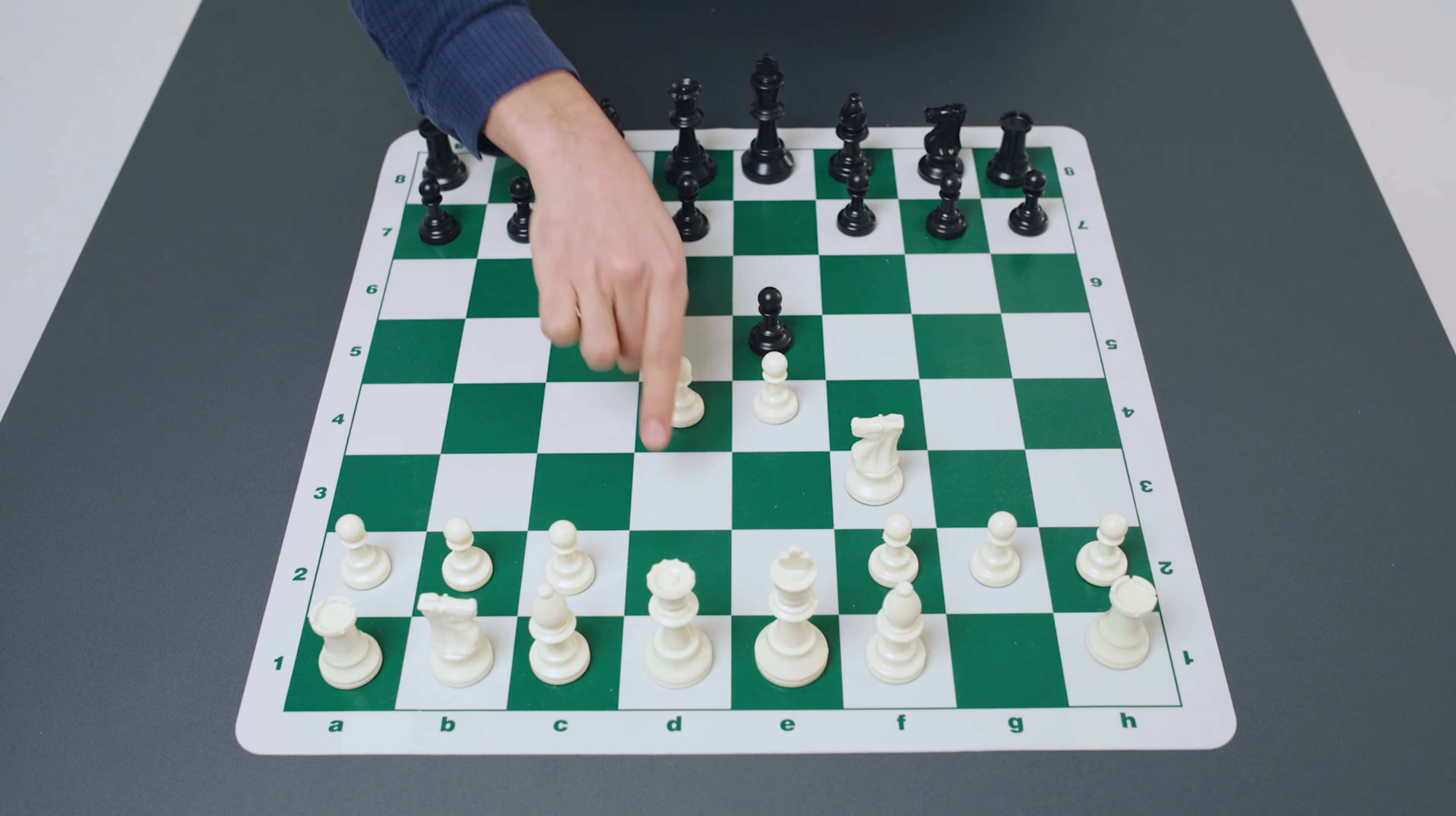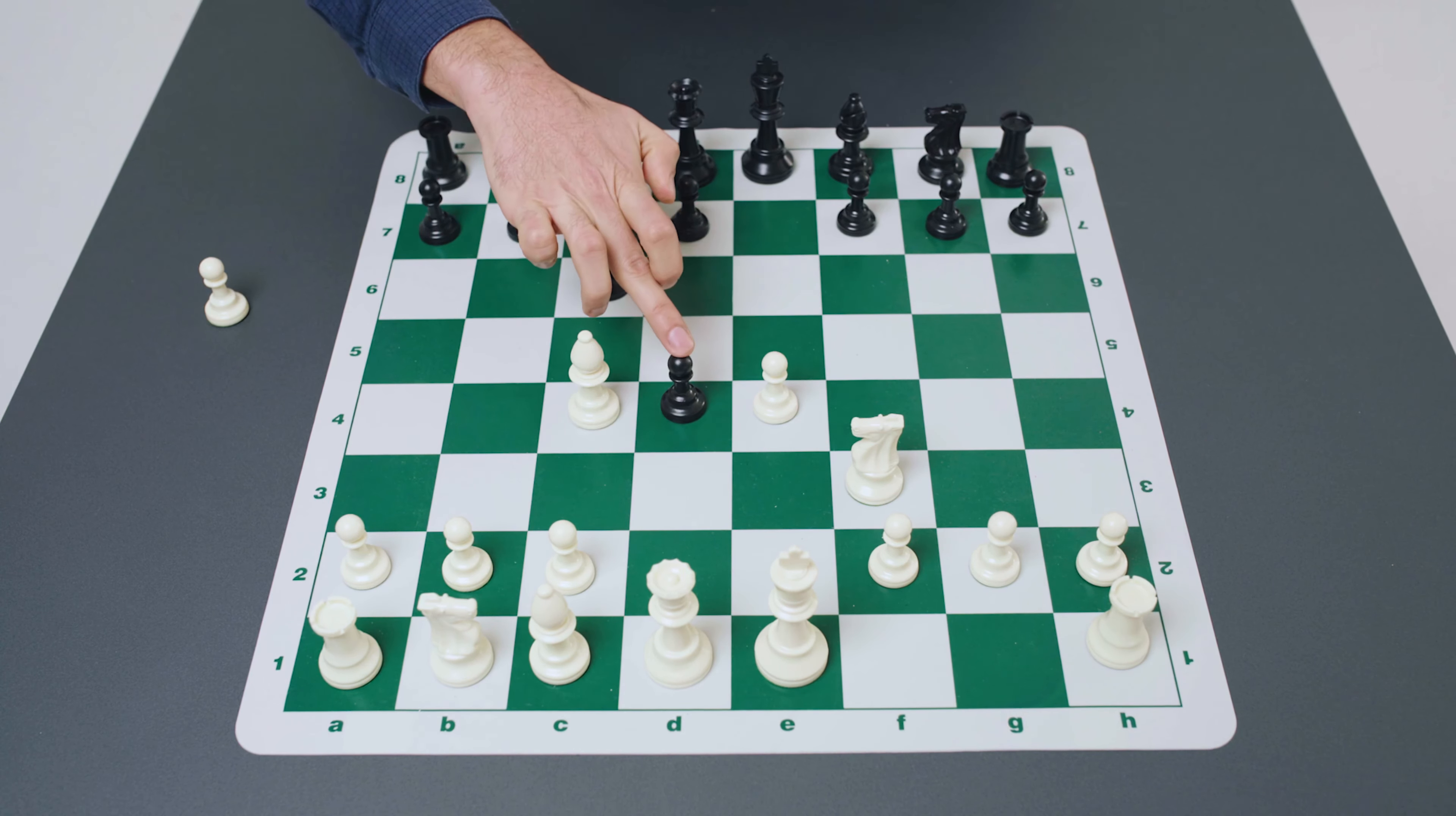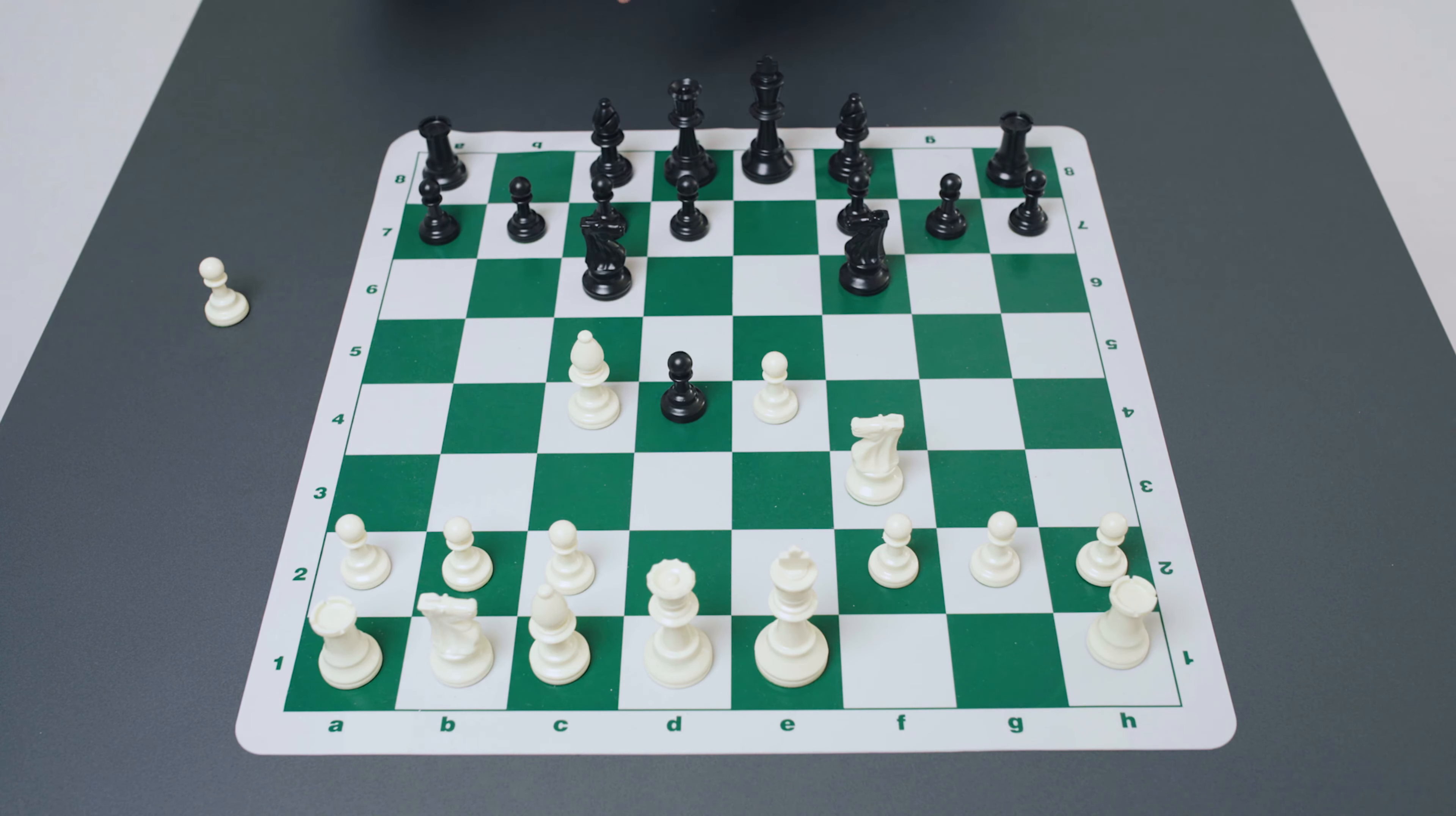The very final option against the two knights defense, we've already seen knight to g5, the knight attack on f7, pawn to d3 defending the pawn on e4 and activating the long diagonal for the bishop on c1. Finally we see the more aggressive pawn to d4. This move is known as the open variation as white seeks to open the center up very quickly.